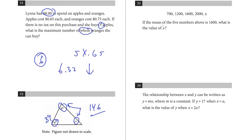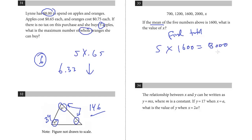All right, question 33: if the mean of the five numbers above is 1600, what's the value of X? This is an average question. Whenever you see a mean or average question, you really want to get in the habit of finding the total or sum of the values — that will help determine the answer. We don't know what X is, but we know the average of the five numbers is 1600. So to find the total, multiply the number of terms by the mean: 5 times 1600 equals 8,000. Then we add up the known numbers, and whatever is less than 8,000 will be the answer.